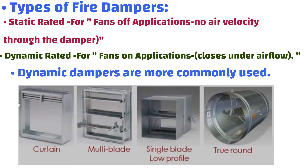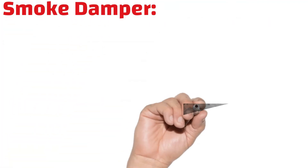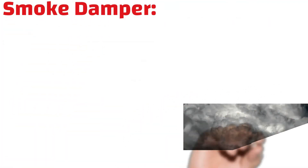Based on construction, fire dampers are also divided into curtain type, multi-blade type, single blade type, low profile, and round type.